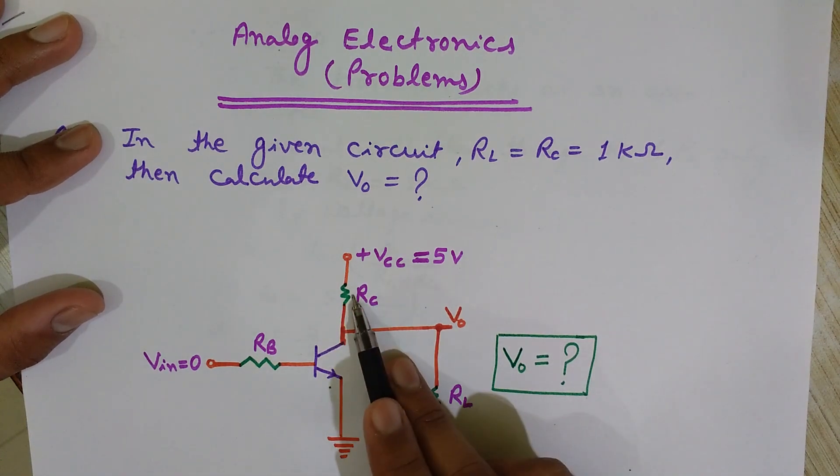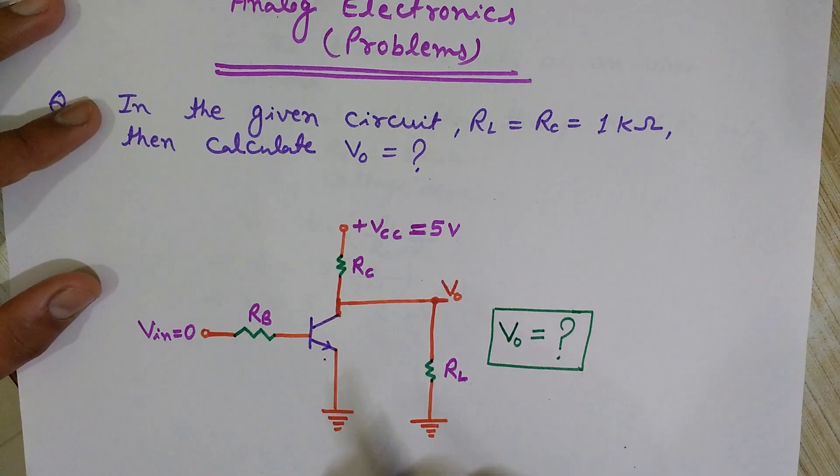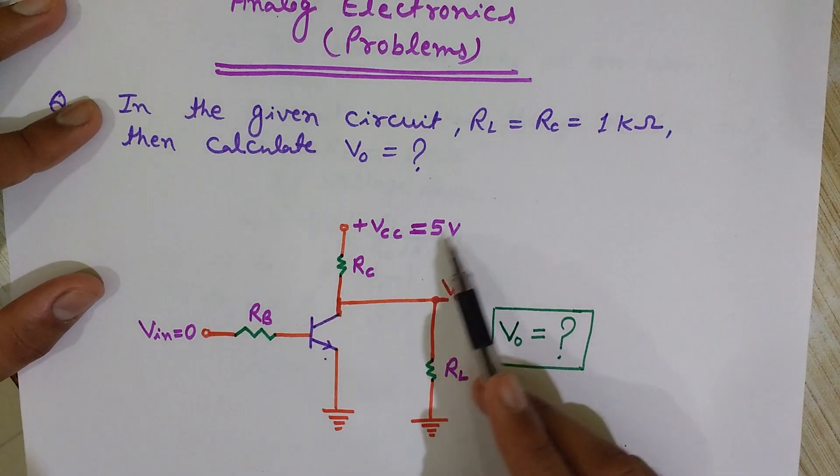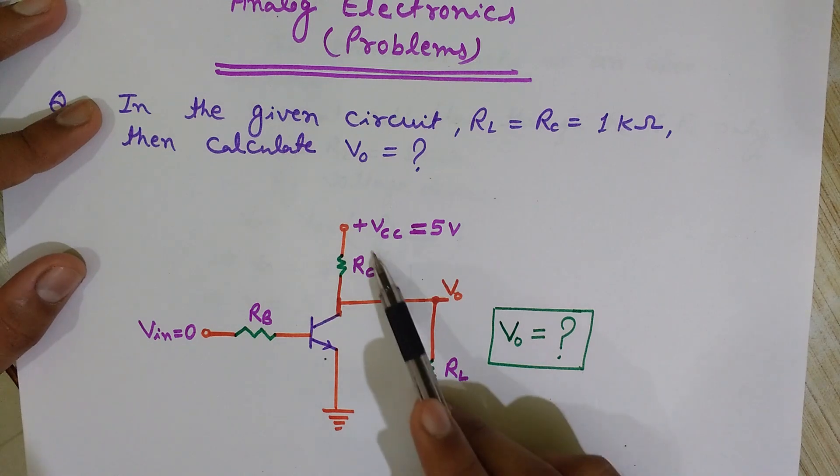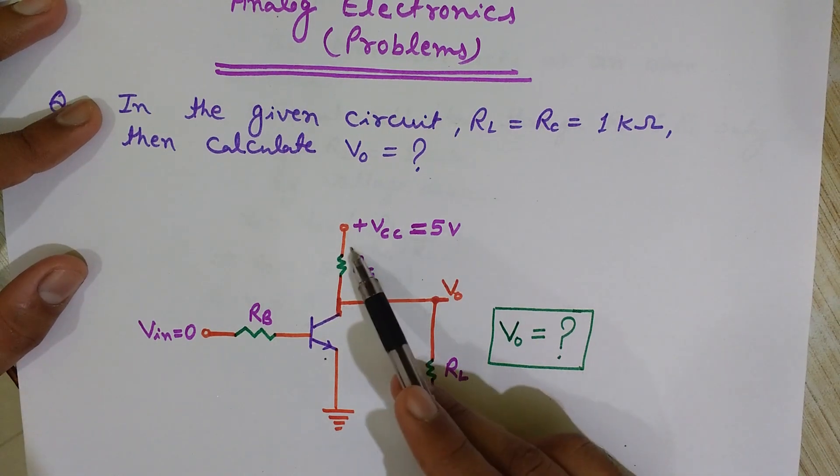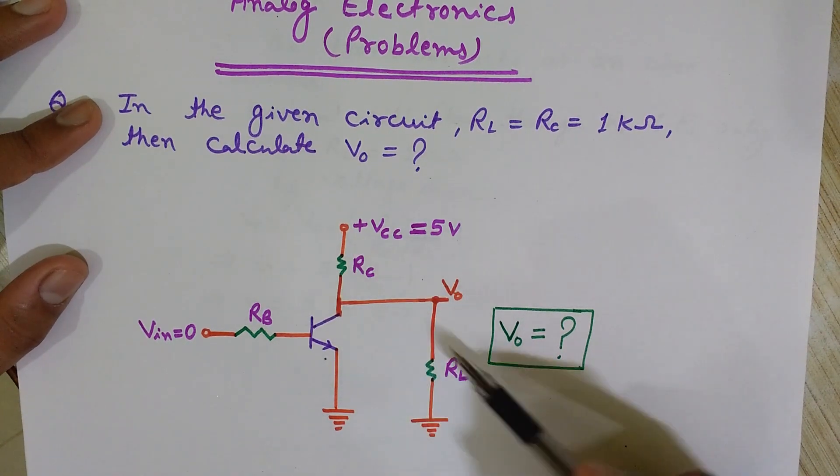The whole current is going through this way. Since RC and RL are equal, this 5 volt voltage will be divided equally between these two resistors, so 5 by 2 voltage across this and 5 by 2 across this, so 2.5 volt and 2.5 volt.